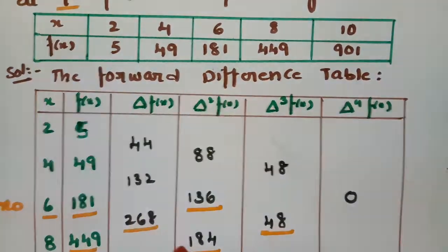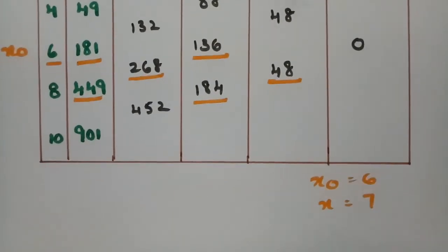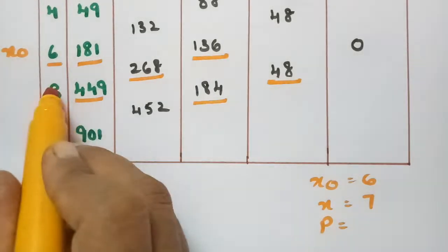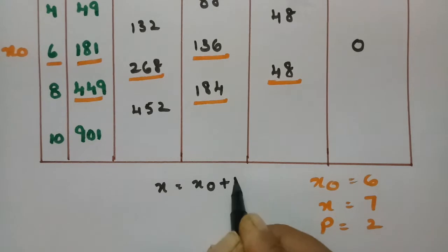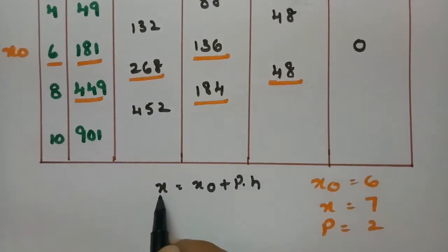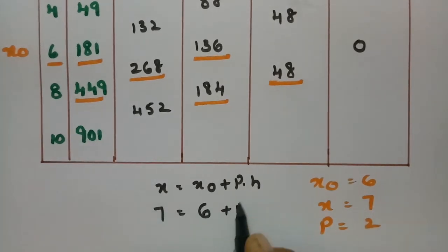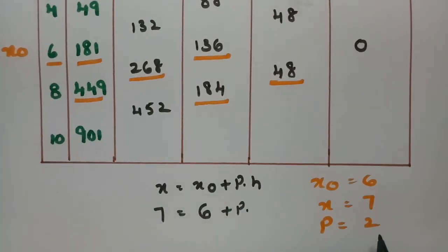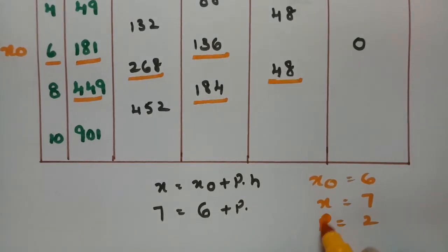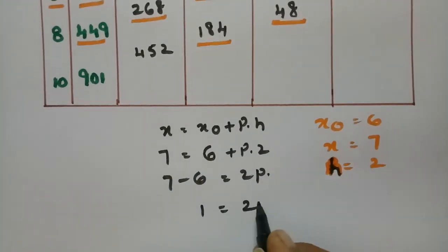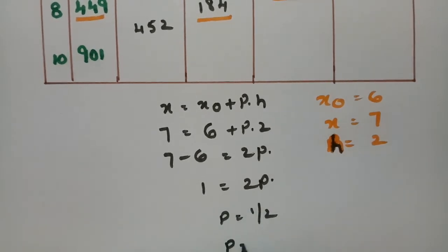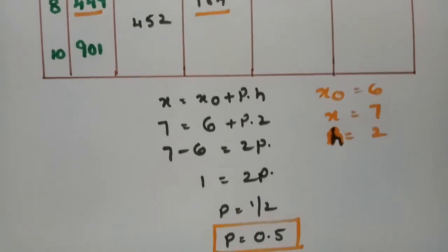The x value to be found is 7, and x₀ is 6. The step size H is the difference between consecutive x values, that is 10 minus 8 equals 2. Using the formula x equals x₀ plus P times H: 7 equals 6 plus P times 2, so 1 equals 2P, giving P equal to 0.5.